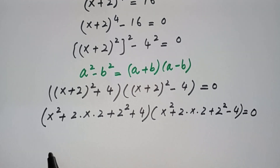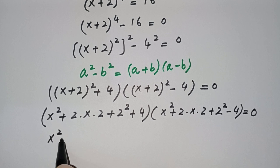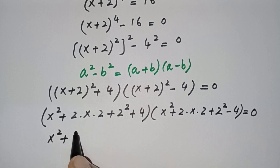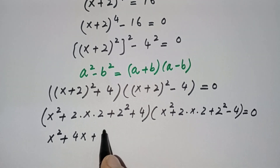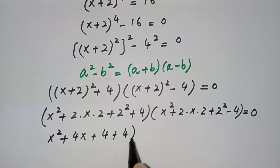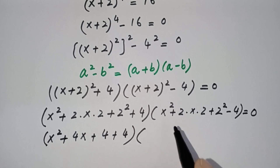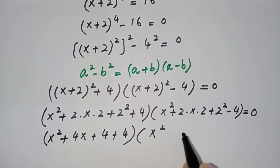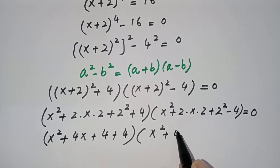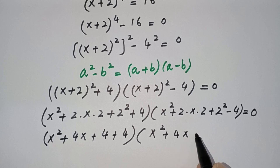So in the next step, 2 times x times 2 gives 4x, and 2² gives 4. We now substitute these expanded forms back into each factor.